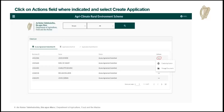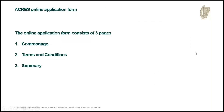Once you have the farm sustainability plan submitted and you go into ACRES, you'll see the screen again with all your clients where you have an access agreement submitted. Hit create application and that'll bring you into the application form. The application form is only three pages long — it consists of commonage, then terms and conditions, and then a summary.